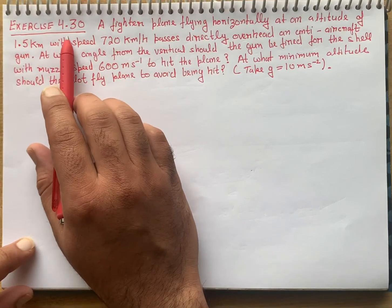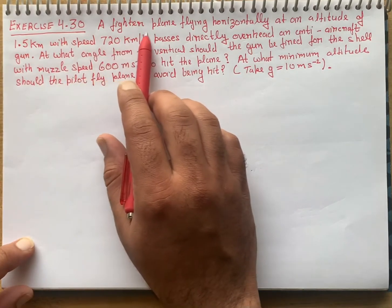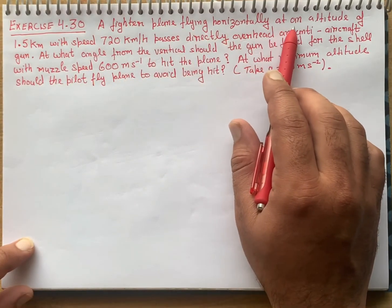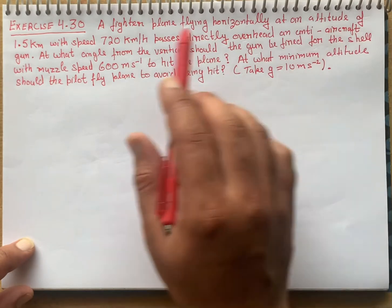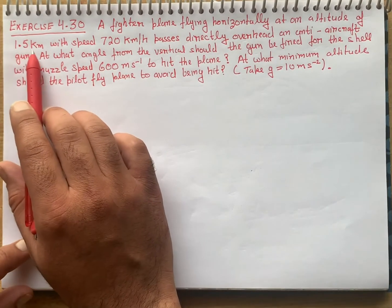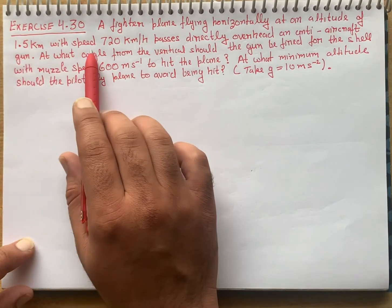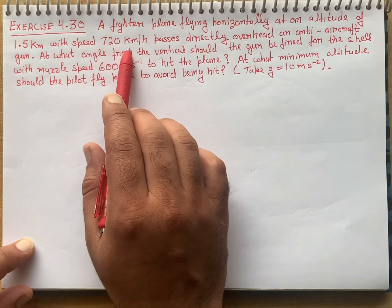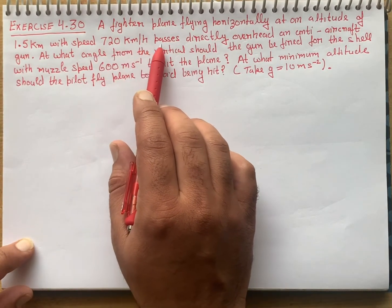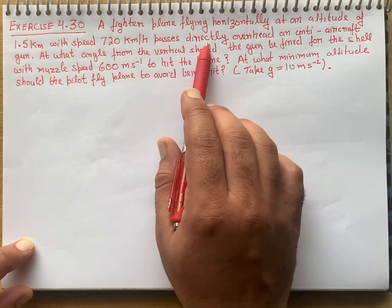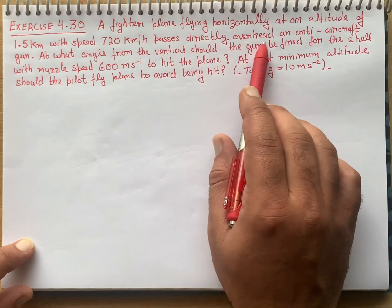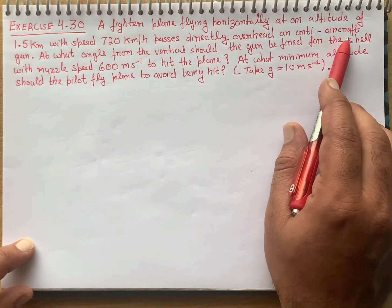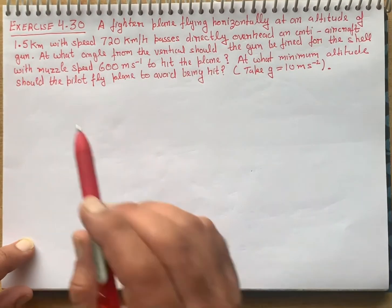Class 11 exercise 4.30: A fighter plane flying horizontally at an altitude of 1.5 km with the speed of 720 km per hour passes directly overhead an anti-aircraft gun.